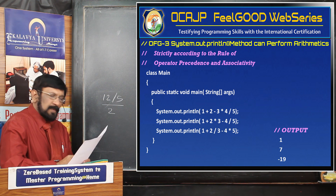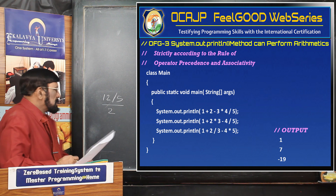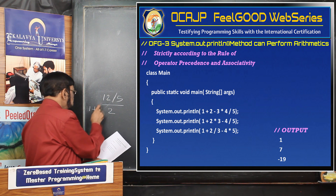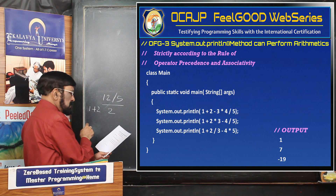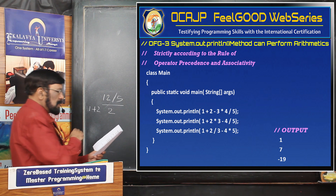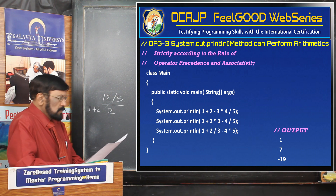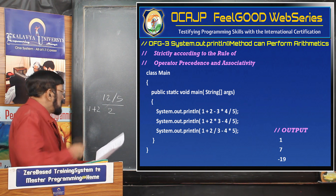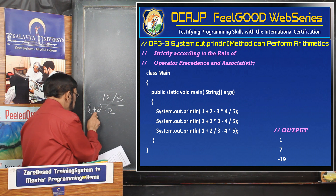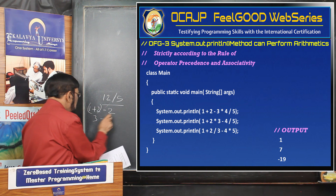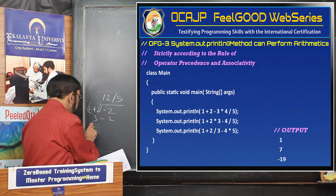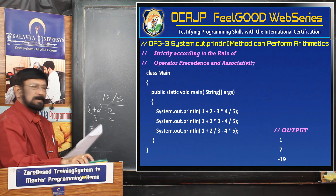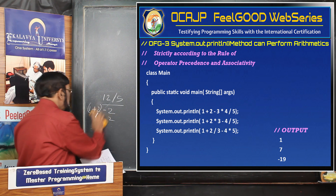Now the remaining operations: 1 plus 2 is 3, minus 2 is 1. So 1 is the final result. In that way, you have to calculate.